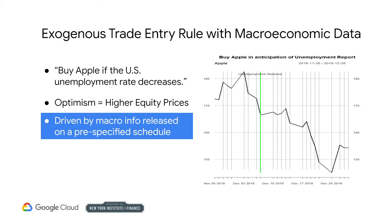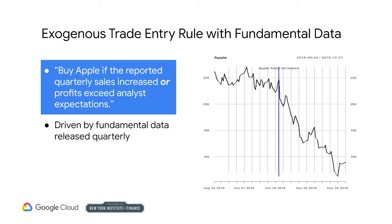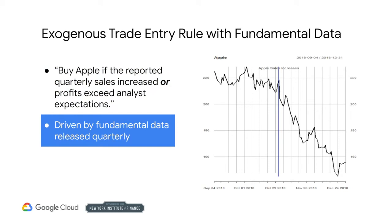These economic indicators get announced at specific times, so it's easy for you to prepare for such trades around events. Let's look at another example of an exogenous rule, this time driven by fundamental data: buy Apple if reported quarterly sales increases or profits exceed analyst expectations. While this rule may get you in the market late, you can see it involves more than Apple's price. Here you have to get Apple's sales and earnings data. This data is not part of Apple's stock history, so it is exogenous.